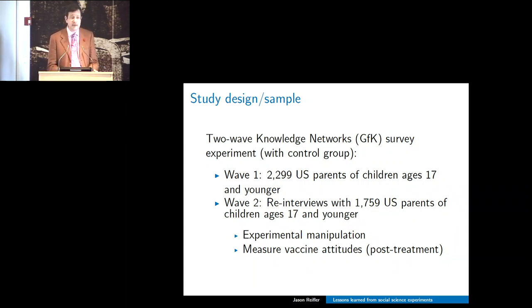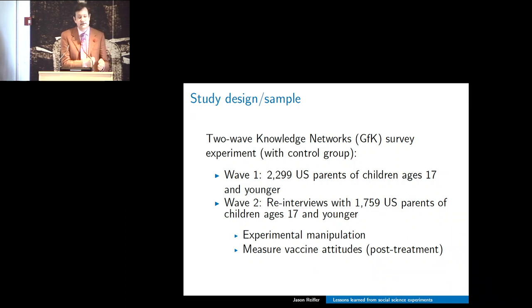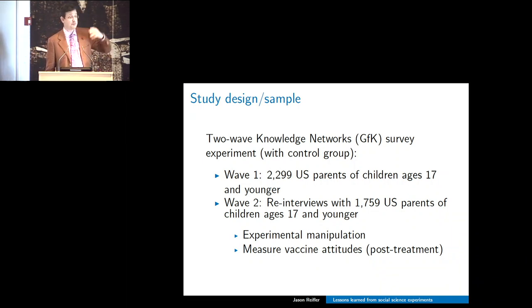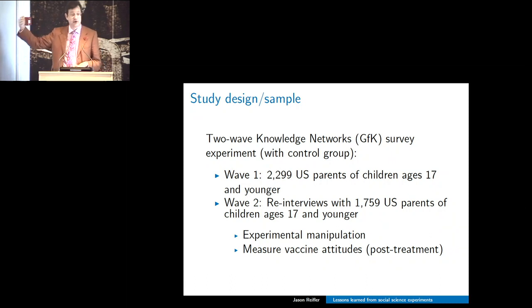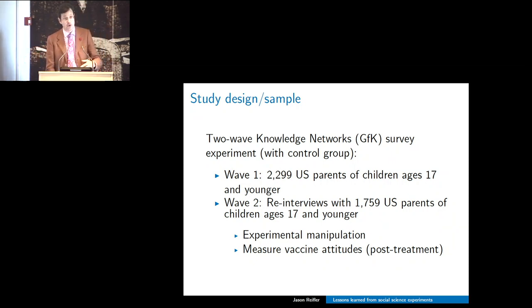On our study design: because we're interested in motivated reasoning, we wanted to know people's pre-treatment attitudes without priming the things we were studying in the experiment. We did a two-wave study. We interviewed parents of children ages 18 and younger living in their household on a number of things, including a vaccine scale. Then about a week to ten days later, we invited them to take a second part of the study where we actually ran the randomization, so that our pre-treatment attitudes were measured sufficiently before the experimental treatment, then we measured vaccine attitudes again post-treatment.